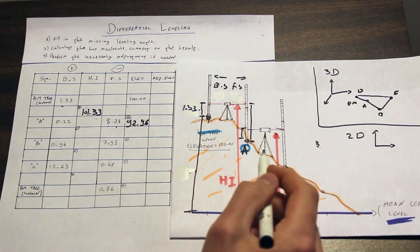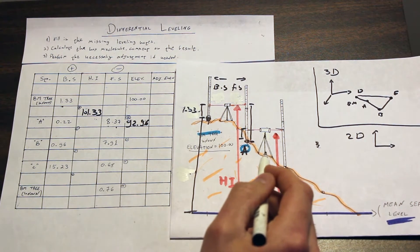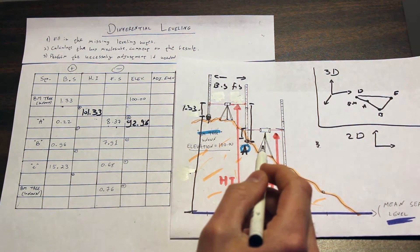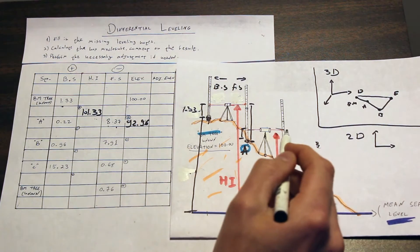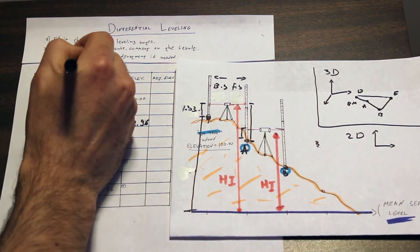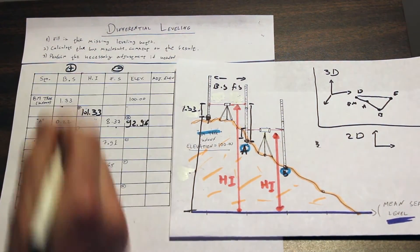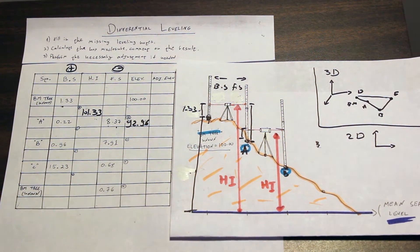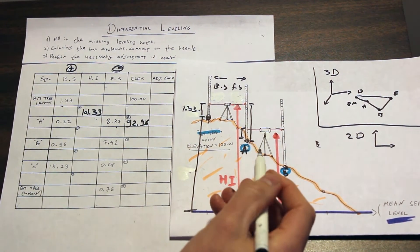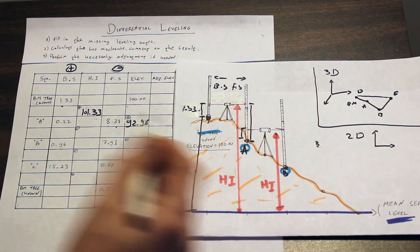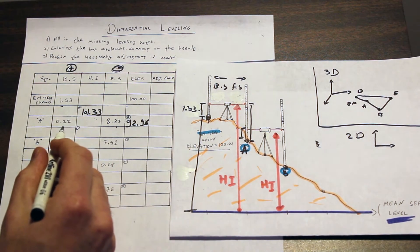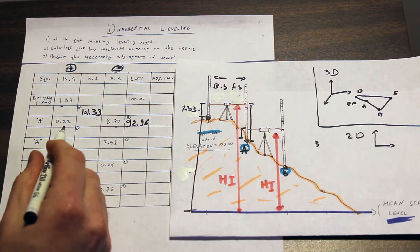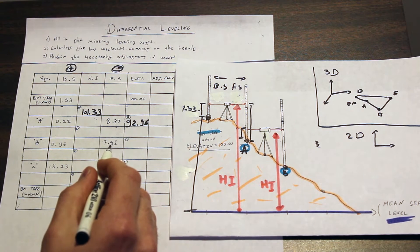Moving on. We stand with our device over here and we take a backside and we take a foresight. A good thing to do is always to write plus and minus here so you will remember what you need to add and what you need to deduct. At this point, our backside gives us 0.22 meters while our foresight gave us 7.91 meters.